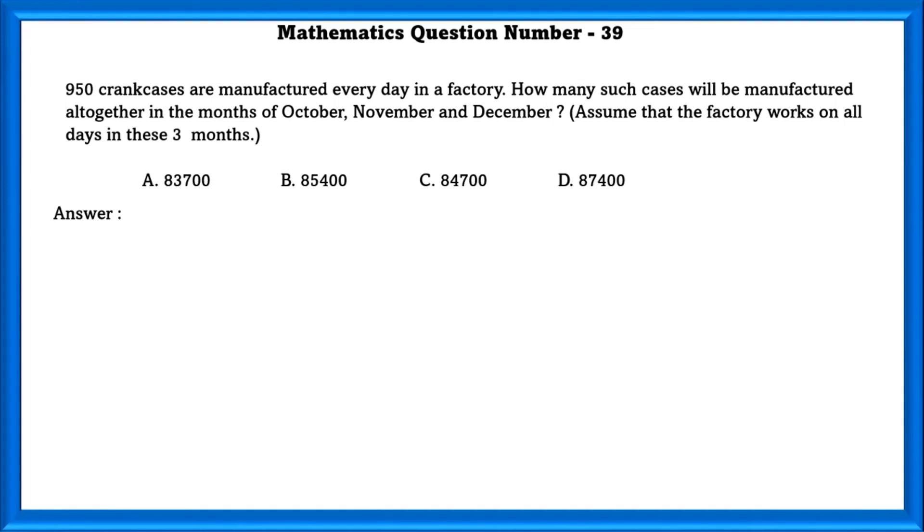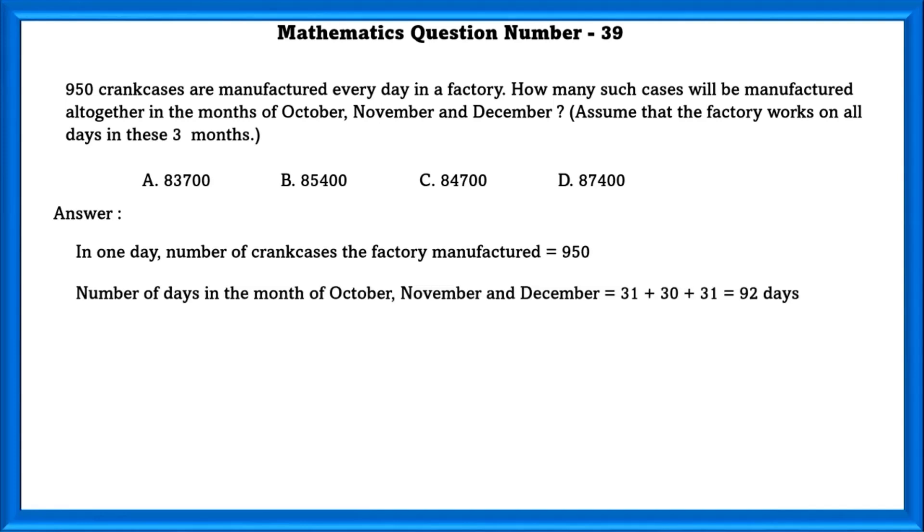Mathematics question number 39. 950 crank cases are manufactured every day in a factory. How many such cases will be manufactured altogether in the months of October, November and December? Assume that the factory works on all days in these three months. In one day, number of crank cases the factory manufactured is equal to 950. Number of days in months of October, November and December is equal to 92 days. So number of crank cases manufactured in 92 days is equal to 87,400 crank cases.